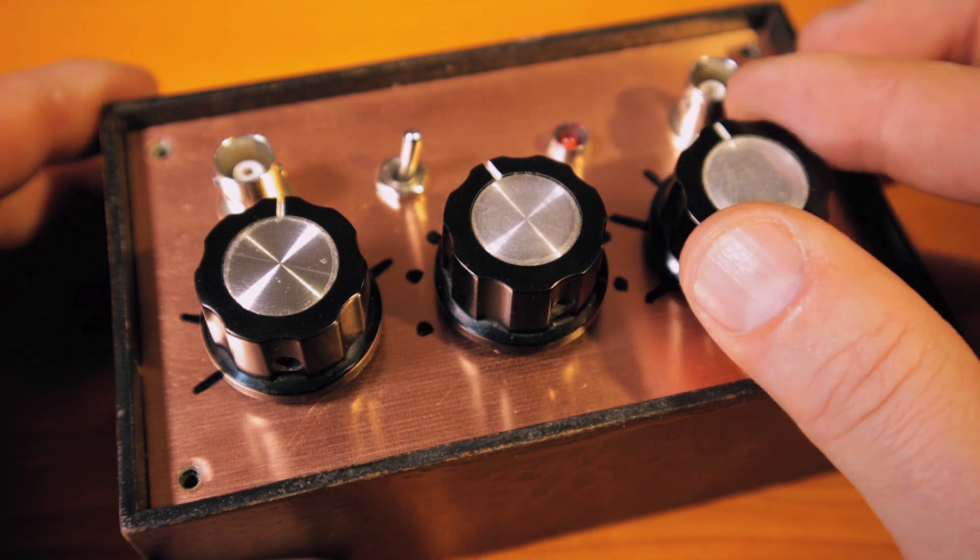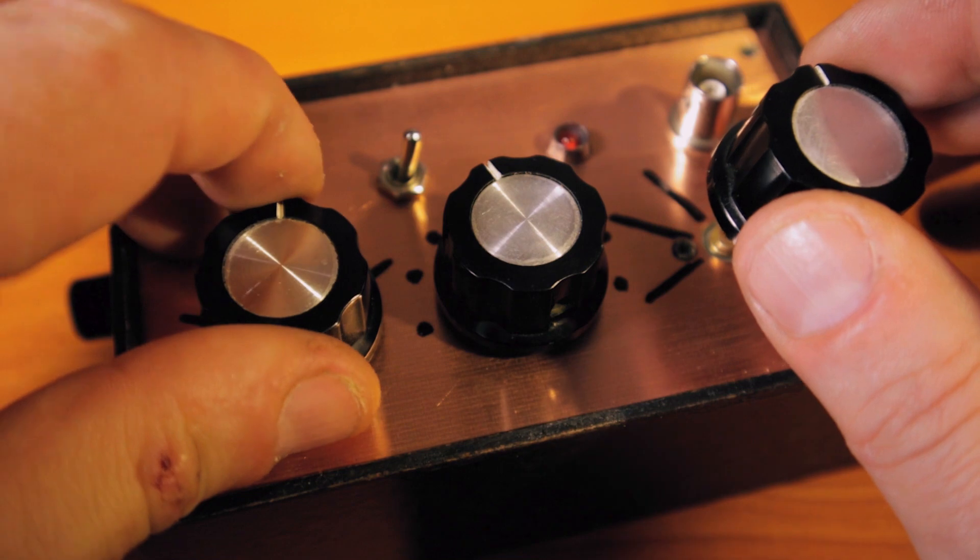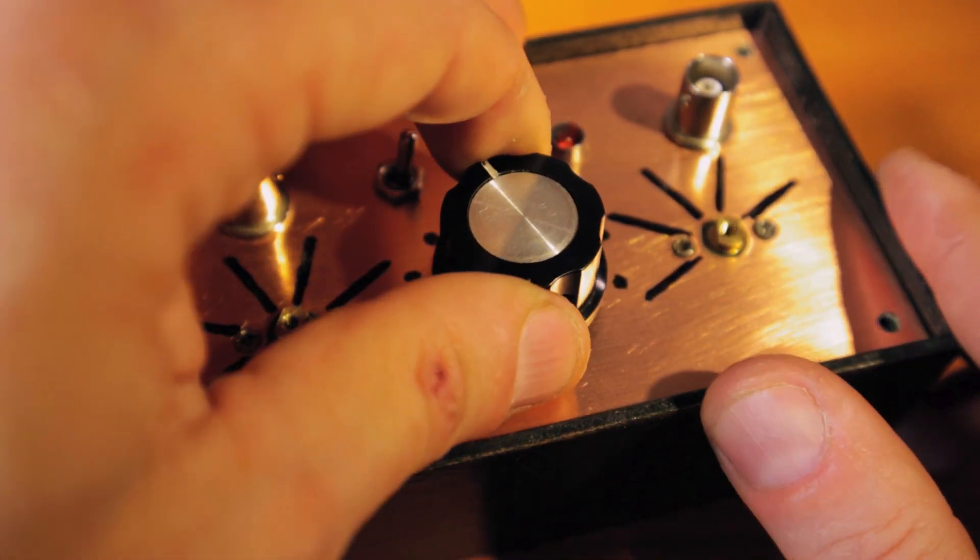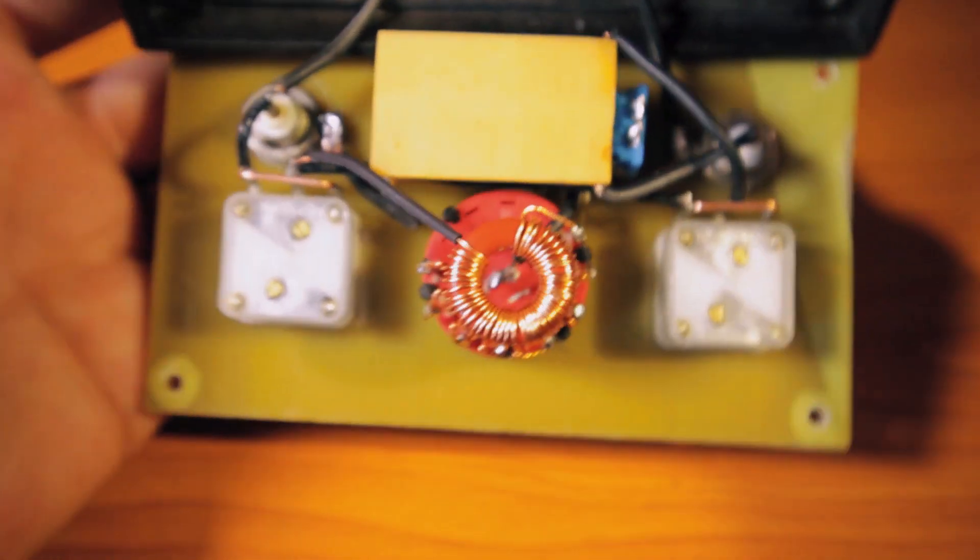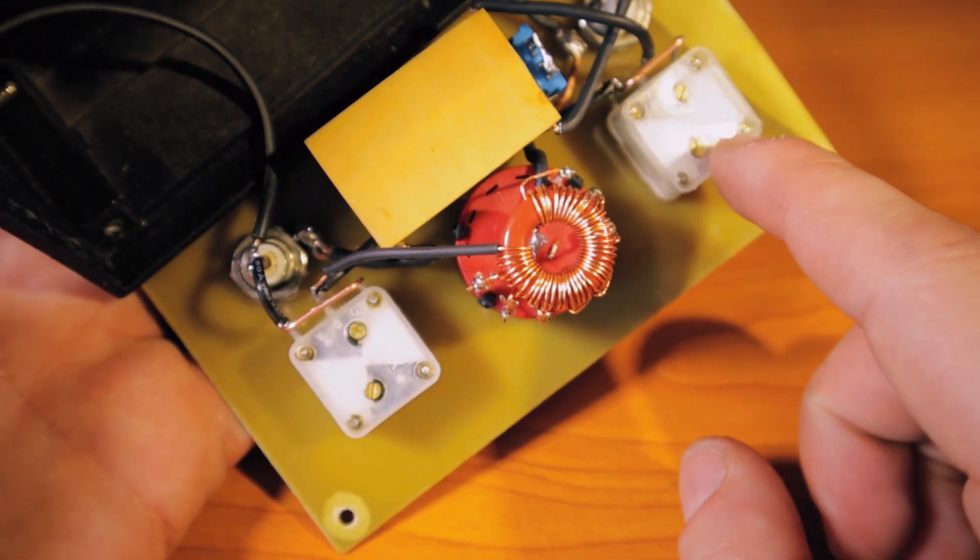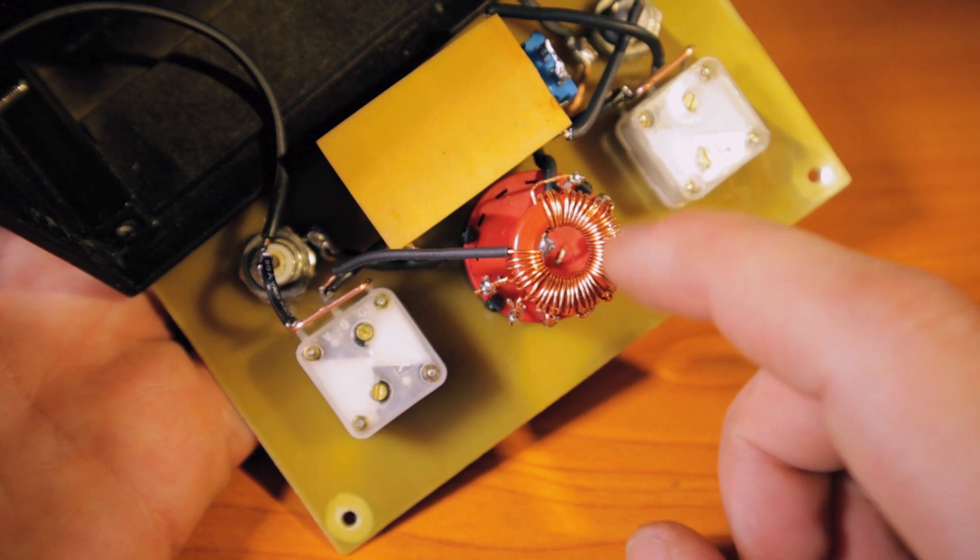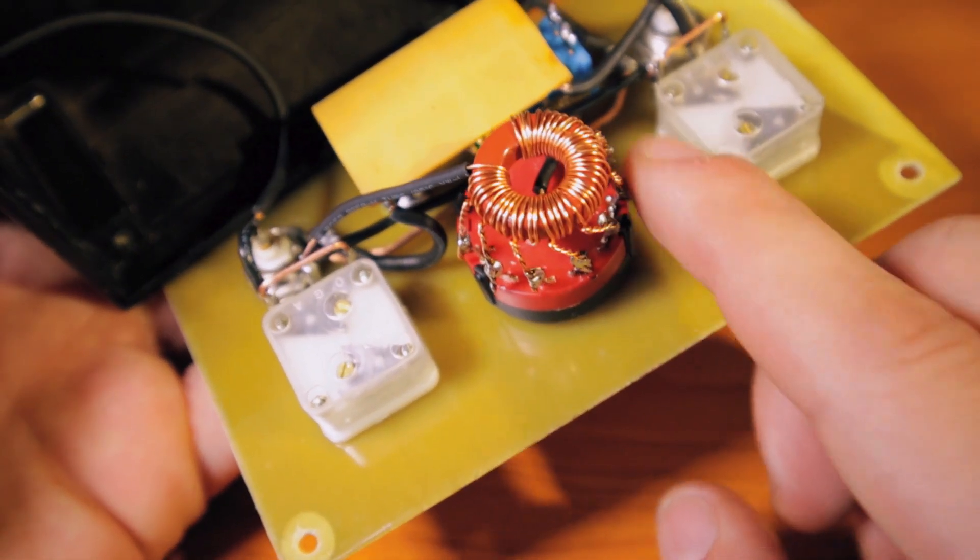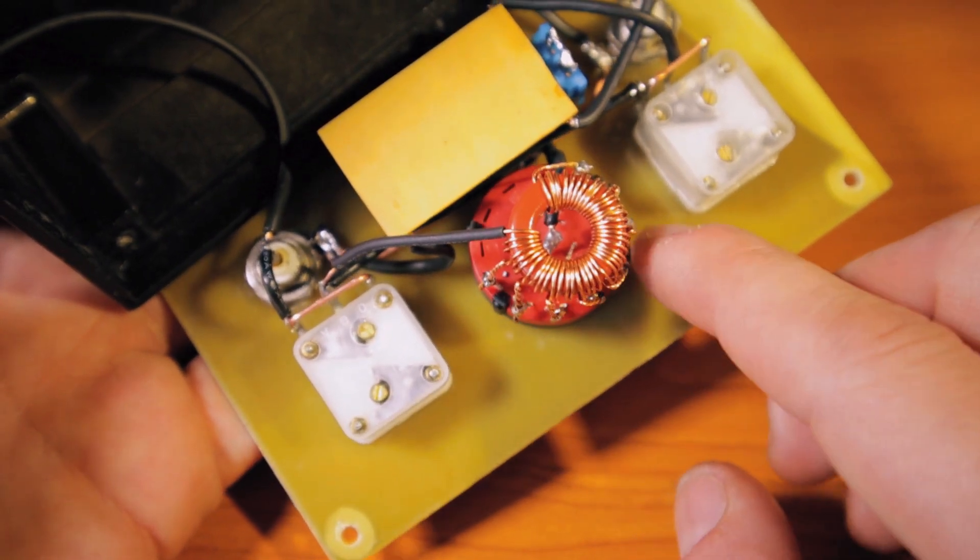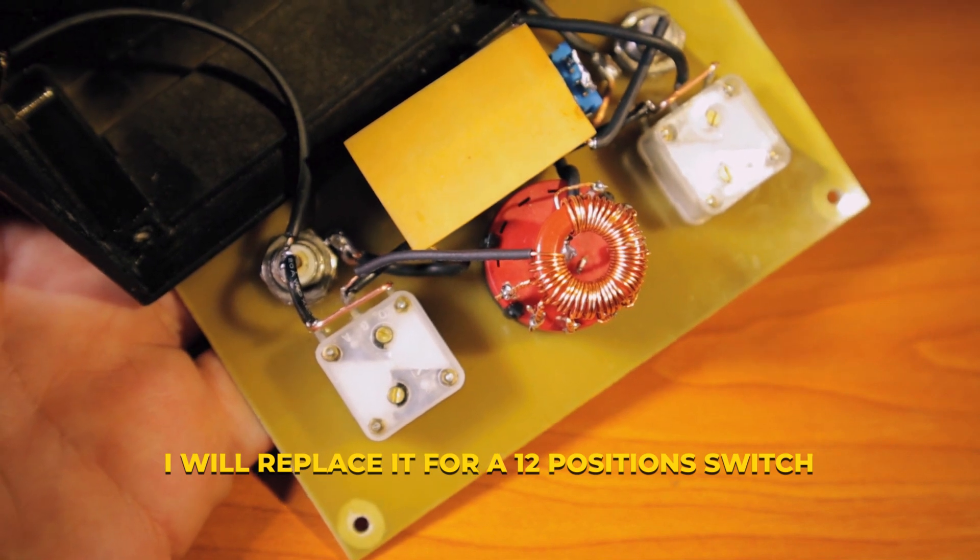I'm just going to open it really quick and show you the insides. It's very simple. I'm going to turn it upside down. I have these two capacitors, I believe they're about 220 picofarads each, and this coil, the inductor with a switch that allows me to change different inductance values.